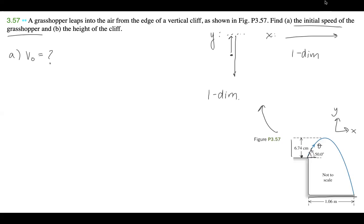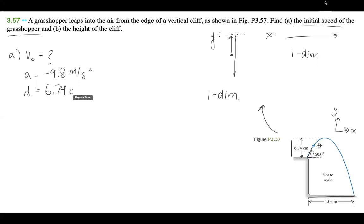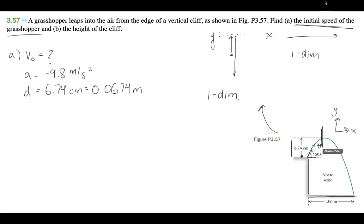Looking purely at the Y component, we have acceleration, which is negative 9.8 meters per second squared. And then we have a height — a distance of 6.74 centimeters, or 0.0674 meters. We don't know what time is, we don't know what VF is, and we don't know what V-naught is, because that's what we're trying to find. But we can break this question down to realize that we can actually choose our own VF.